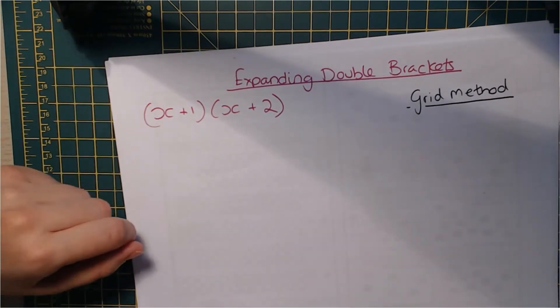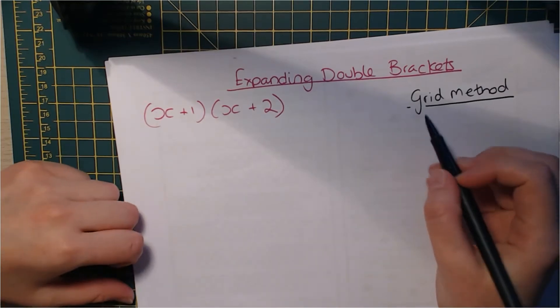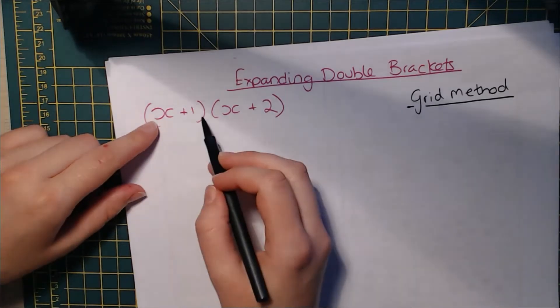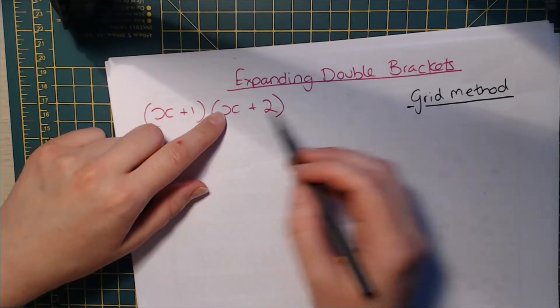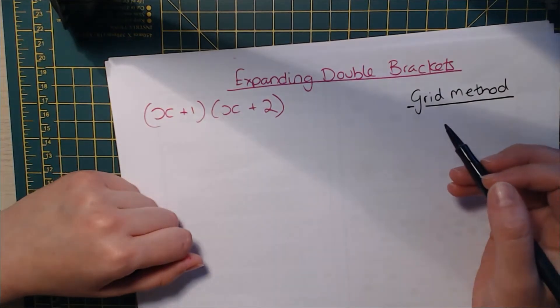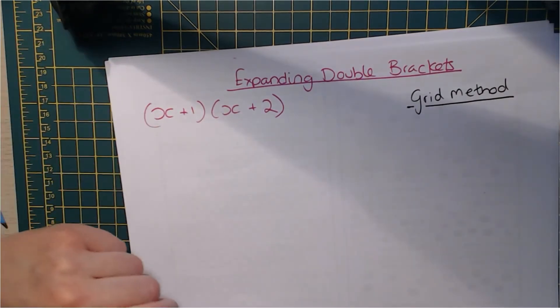So using the grid method, the reason I like this is because it works for lots of different things. If you had a bracket here with two terms and one here with nine terms in, I'm not going to give you that, but if you did, this method would still work, which is why I like it and it's really clear.